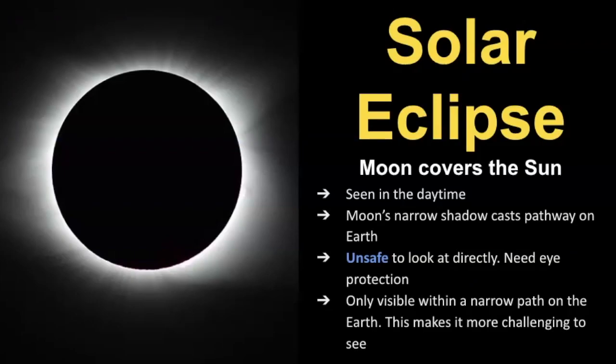Now we'll take a look at some of the characteristics of a solar eclipse. A solar eclipse is when the moon covers the sun, and it can only be seen in the daytime. This is the opposite of when you can see a lunar eclipse. The moon's narrow shadow casts its pathway along Earth, and we'll take a look at some diagrams of that soon.